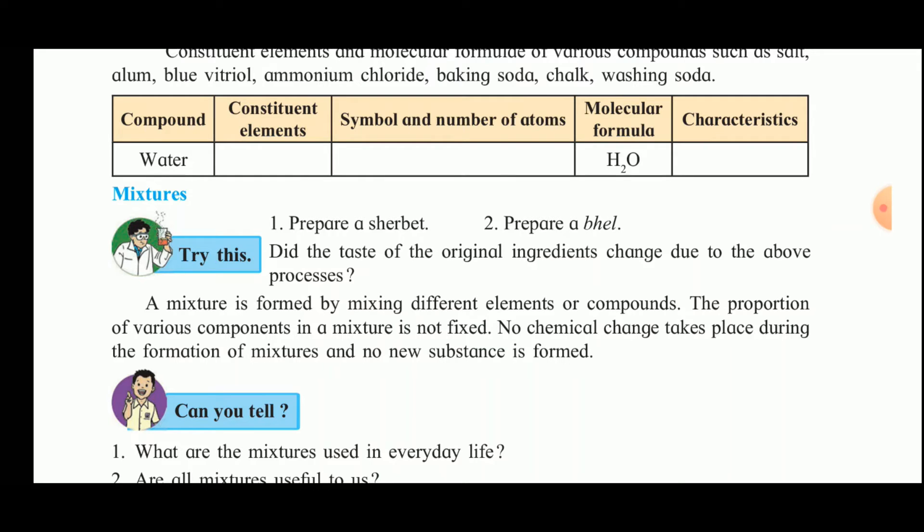When you make bhel, we use rice flakes (murmura), chana, groundnut, onion, chili, and coriander.